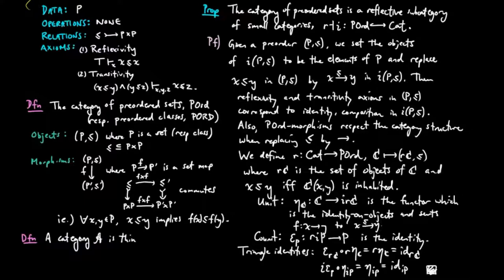We call a category A thin provided for all pairs of objects x and y, the HOMSET AXY is either empty or a singleton set. In other words, small thin categories are equivalent to pre-orders.